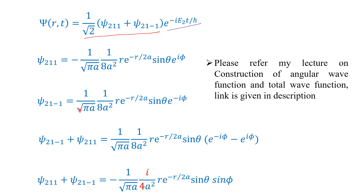For ψ₂₁₋₁, it is the same wave function but with a positive sign instead of the negative sign, and e^(−iφ) instead of e^(iφ) in the exponential term. For details, please refer to my lecture on construction of angular wave functions and the total wave function — I have given the link in the description box.